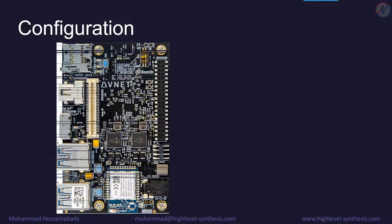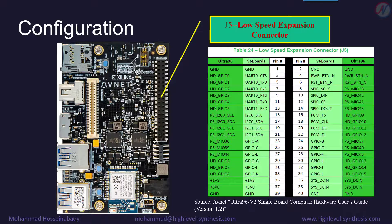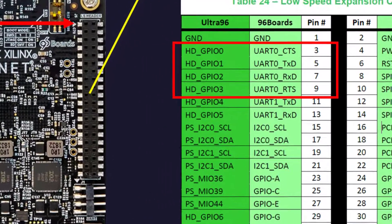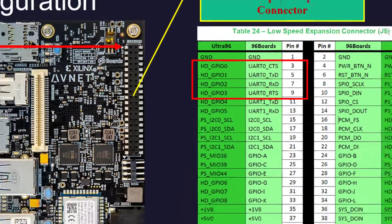The board has a 40-pin low-speed expansion connector that will be used in this video to control LEDs. This table shows the pin names and their layouts. We will use four pins named HD_GPIO0 to HD_GPIO3 in this design.